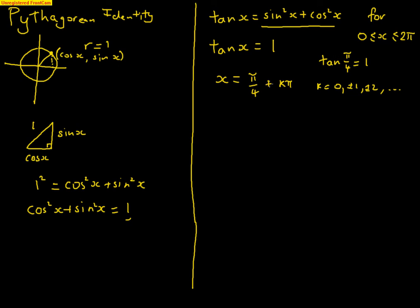Alright, now we need to think of our domain for our solutions. So, x can be equal to pi on 4 is our smallest one. And we're just going to add, because we don't have any negative solutions here, add pi, which is 5 pi on 4.